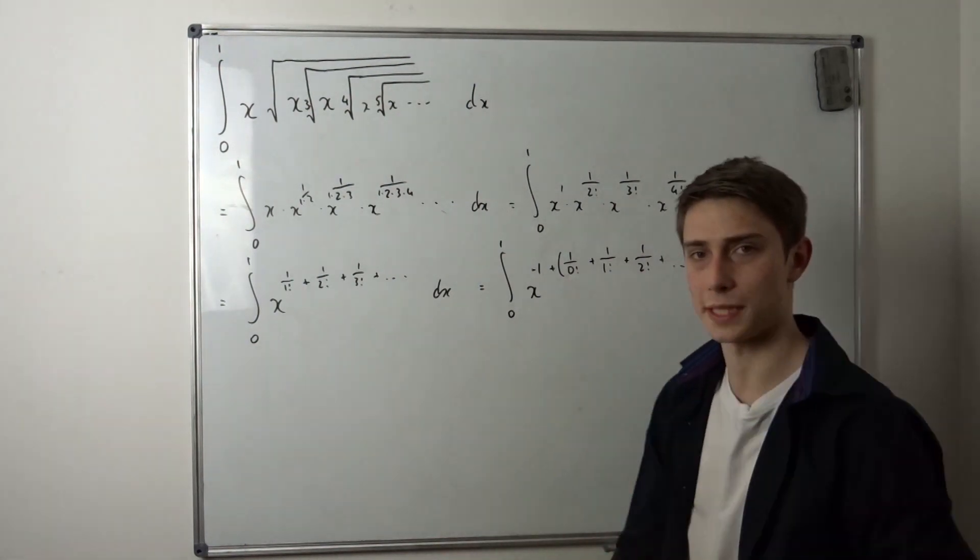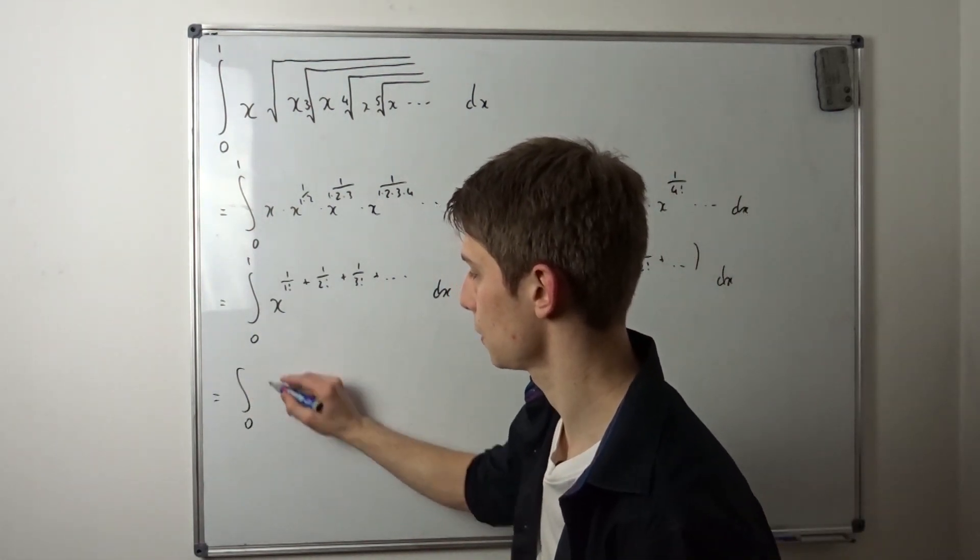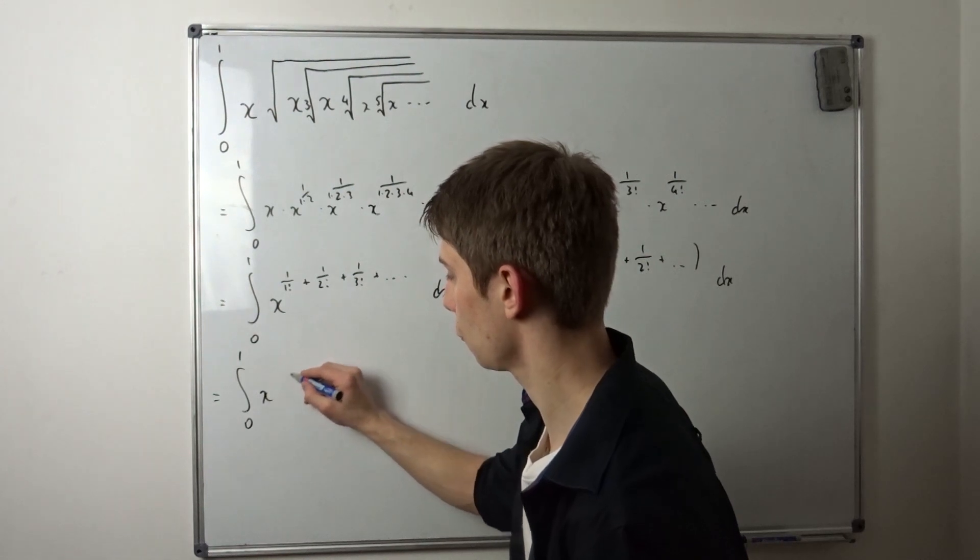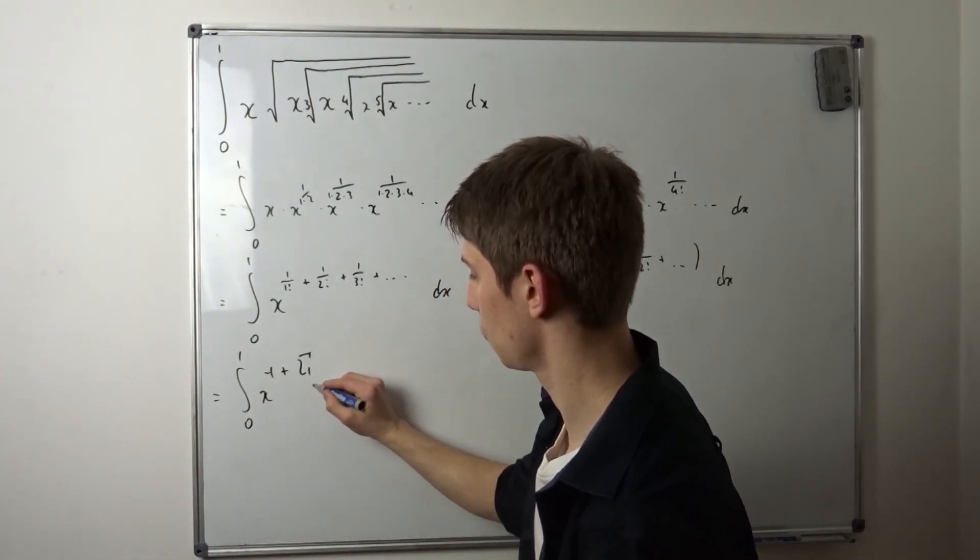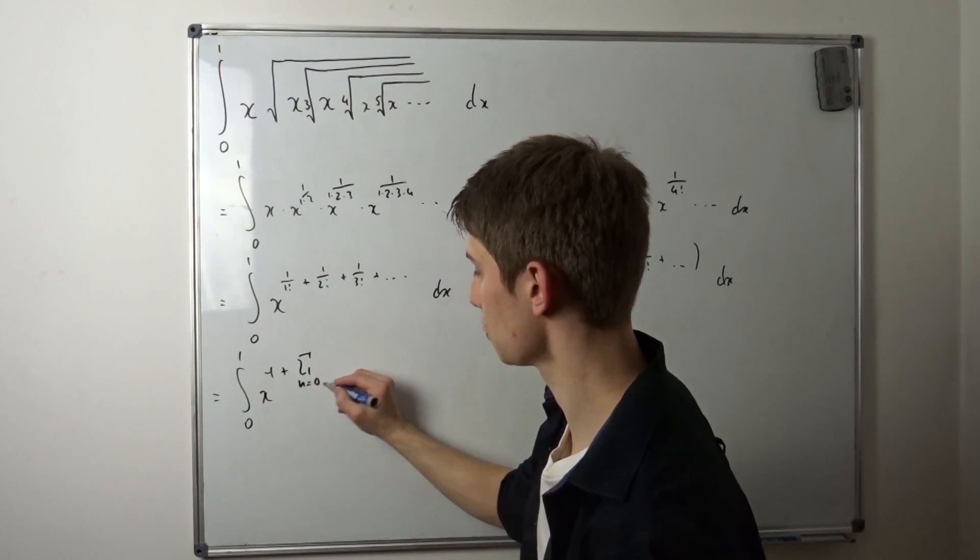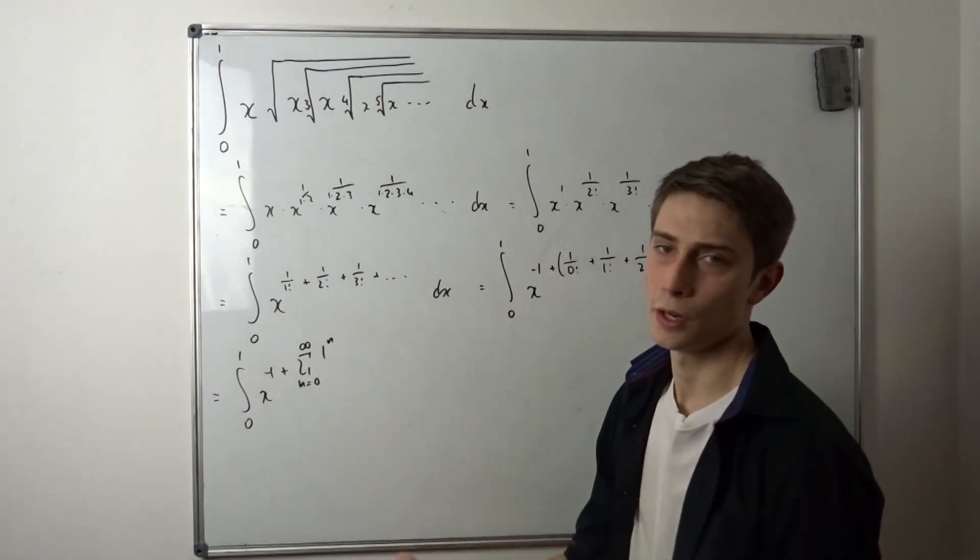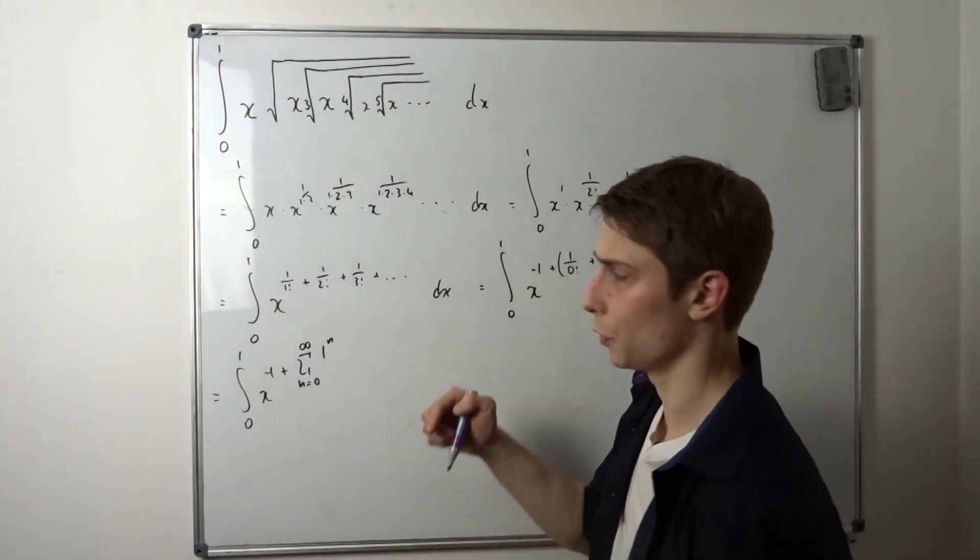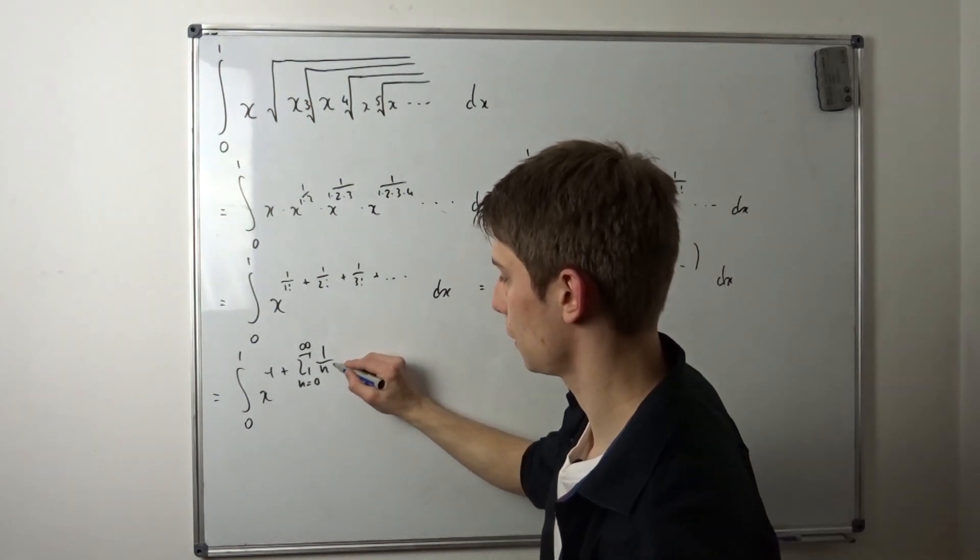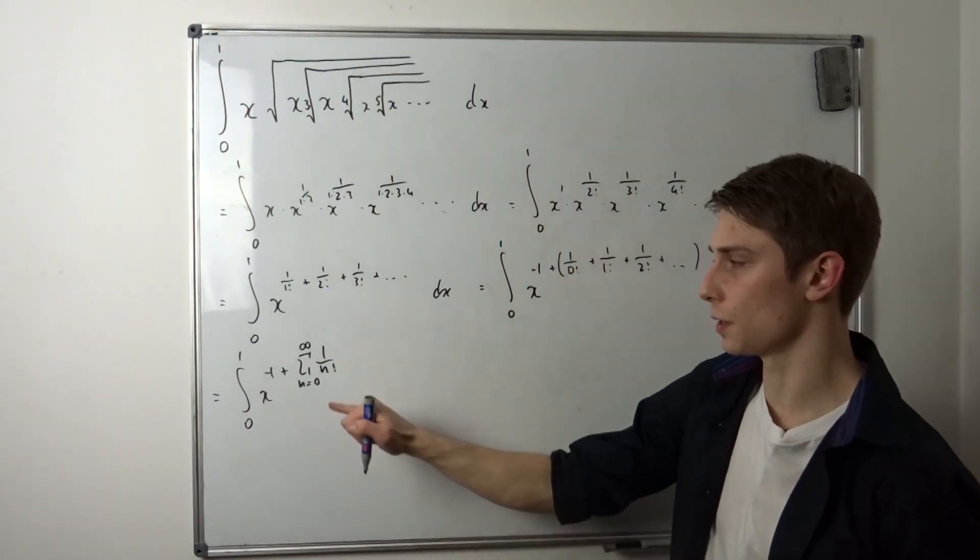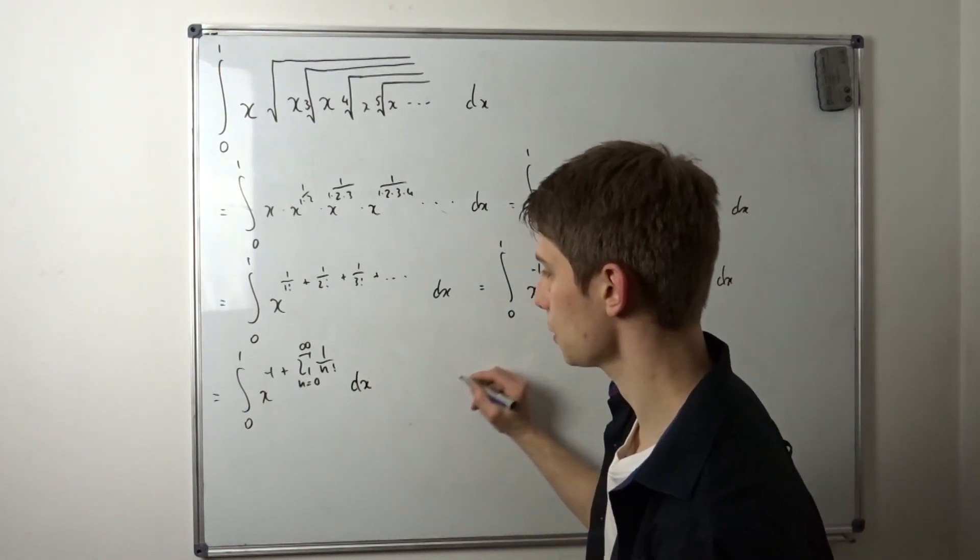dx and we can rewrite this as a sum just to be precise. So that's integral from zero to one of x to the minus one and then plus the sum from n equals zero to infinity of one to the nth power over n factorial. And that's great because we know this is just e to the first power.